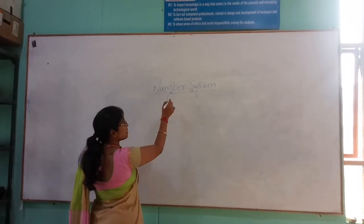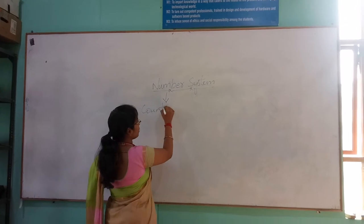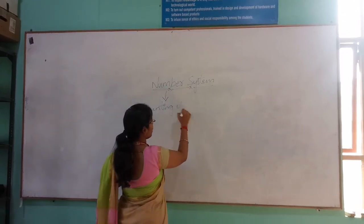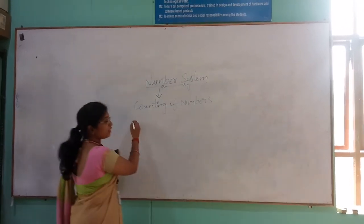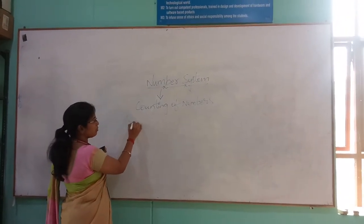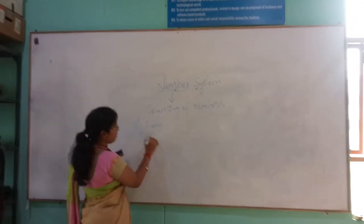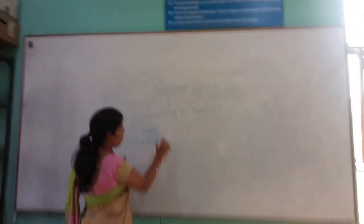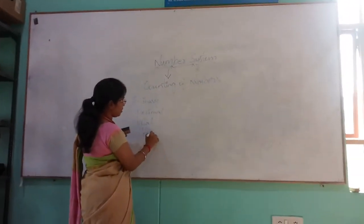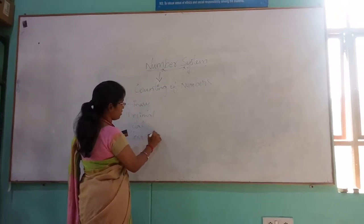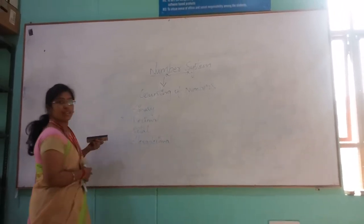The number system is used for counting of numbers. We have many different types of number systems like binary, decimal, octal, and hexadecimal. These are four different types of number systems we are having.